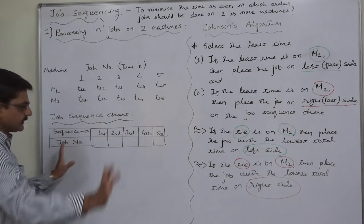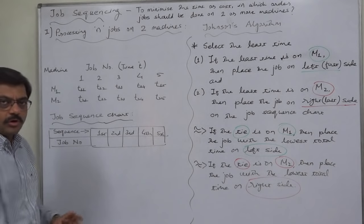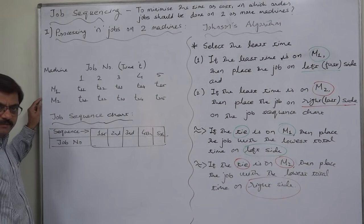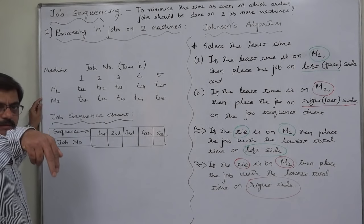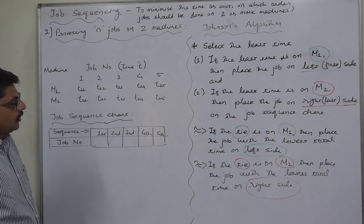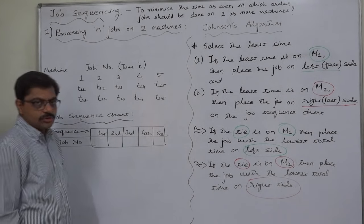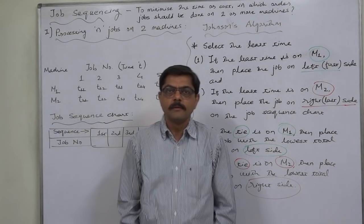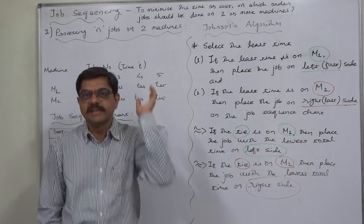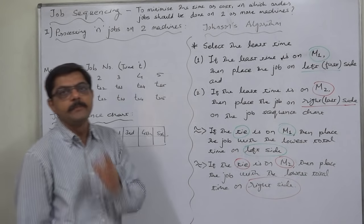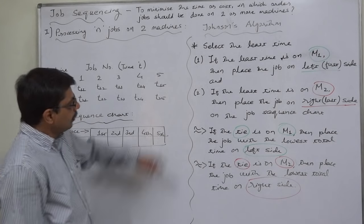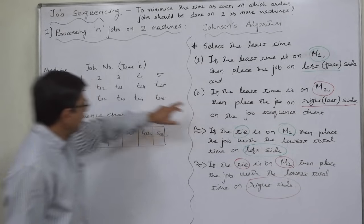Now, what does Johnson's algorithm say? First, we have two machines and n jobs. In this theoretical example, we have five jobs we want to complete on two machines: M1, on which the job is performed first, and M2, the second machine. We need to decide in which order these jobs should be performed so that all five or all n jobs can be completed with minimum consumption of time or cost.